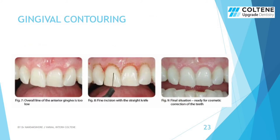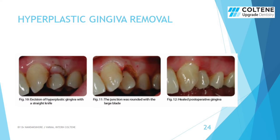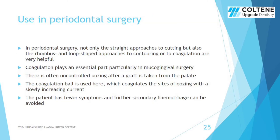Through the images in this slide, it is well demonstrated how easily and cleanly the incision of gingival contouring is made with a straight knife-like electrode tip. This slide shows images of excision of hyperplastic gingival with a straight knife and recontouring the junction with a large blade. In periodontal surgery, it is not only used for straight cutting but also rhombus and loop-shaped approaches to contouring or coagulation are very helpful.